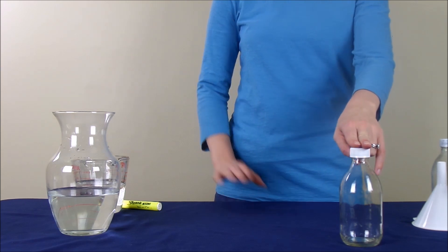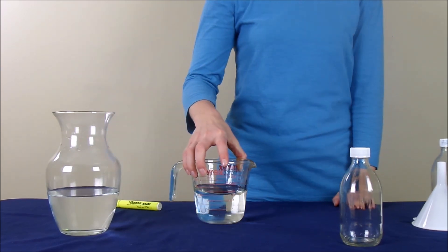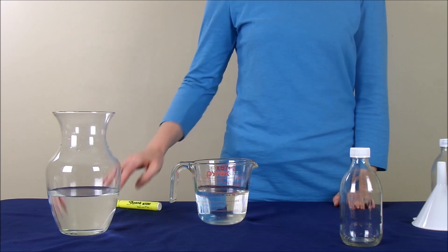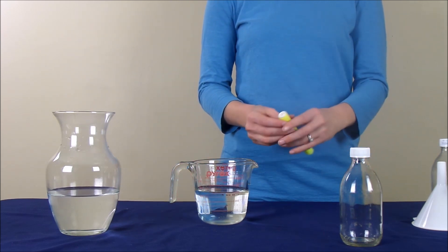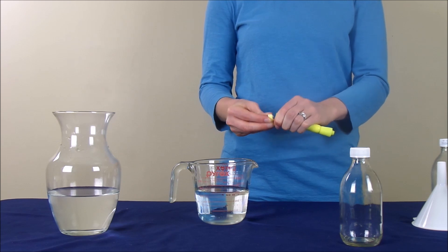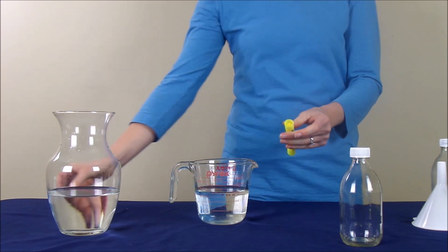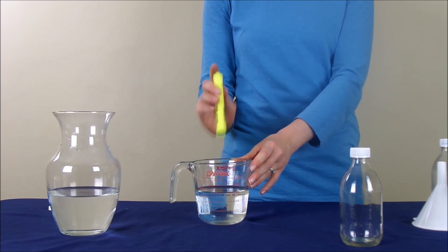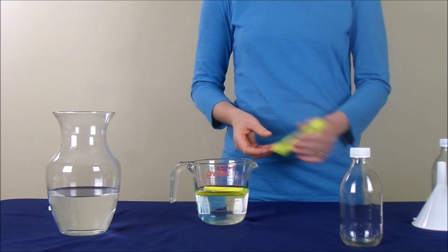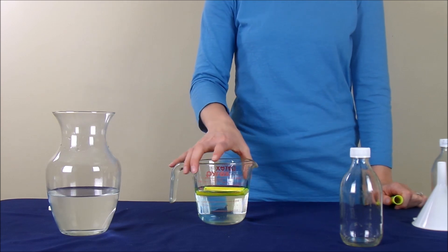So for the first bottle, we're going to prepare some dyed water. To do that, we're first going to start with some regular water, and we're going to take a highlighter. You're going to pop the back off the highlighter, so then you can get the ink out. And you're going to drop the ink into the water, and we're going to let it sit for a little while.